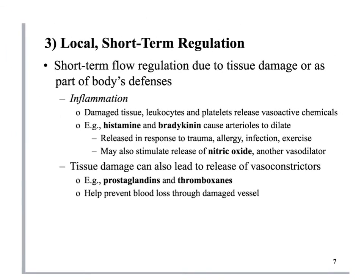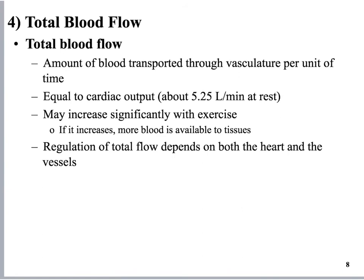Inflammation and tissue damage also increase blood flow. Examples of vasodilators include histamine, bradykinin, nitric oxide, prostaglandins, and thromboxanes. When you take aspirin, it's an anti-thromboxane inhibitor that helps stop inflammation by preventing the production of those vasodilators.